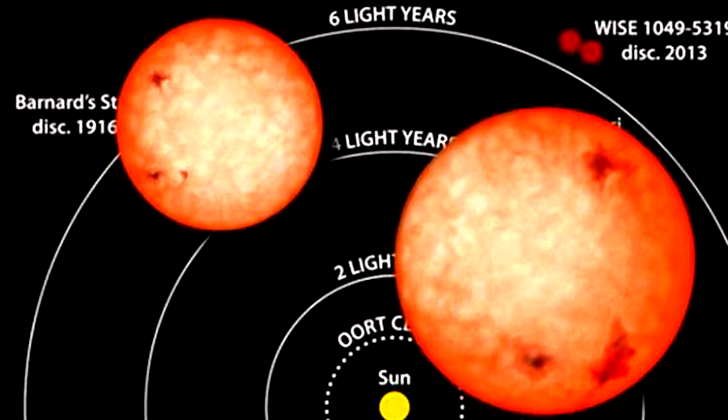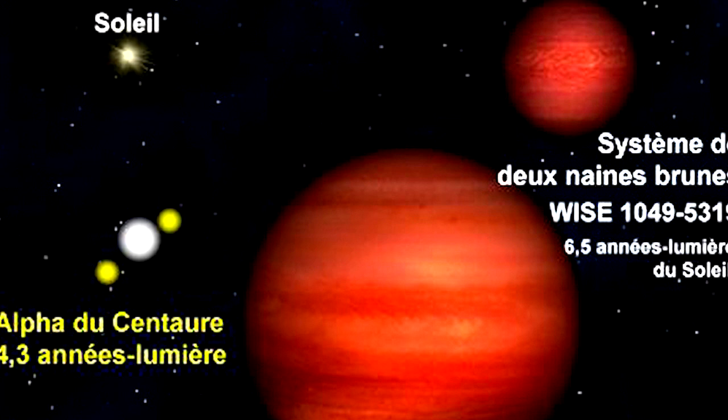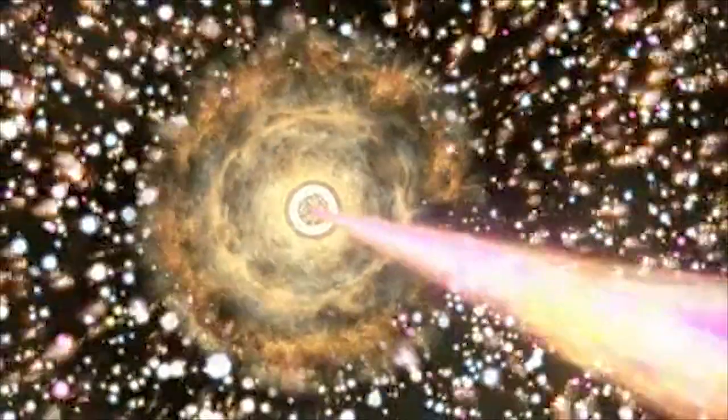By measuring these two motions, Luhman was able to determine that the brown dwarf was a mere 7.2 light years away. There are only six stars closer than that to the sun that we know of, so this object really is nearby as these things go.